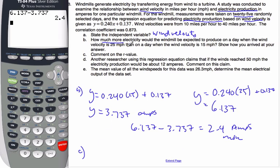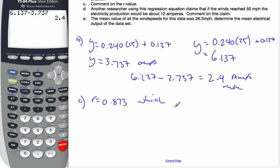Part C says comment on the R value. The R is equal to 0.873, which is a strong linear correlation between the variables. Because this value is quite large, quite close to 1, and it is also positive.